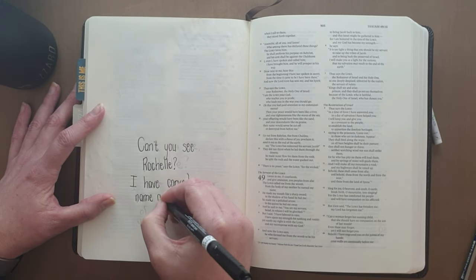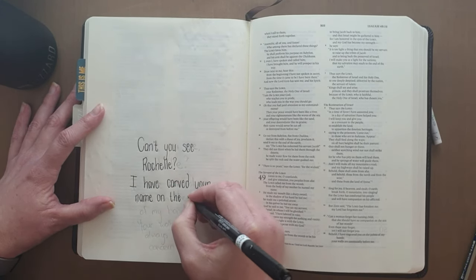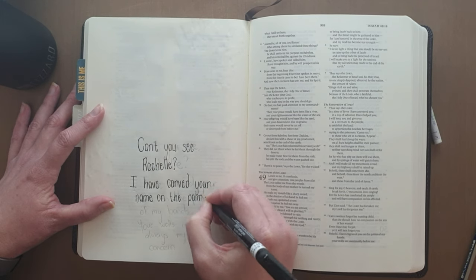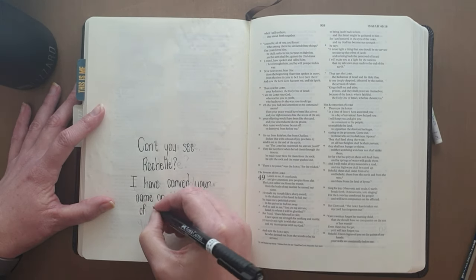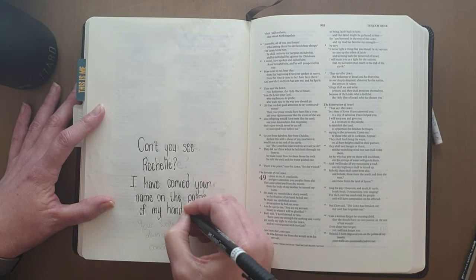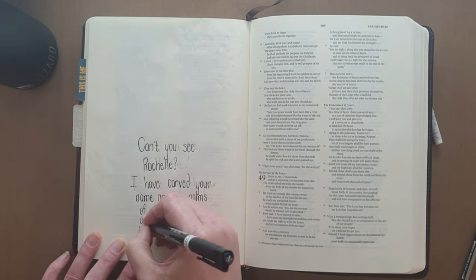And I included my name when I wrote down this verse. The verse says that we are inscribed in the palm of his hand and that our walls are always in front of him.